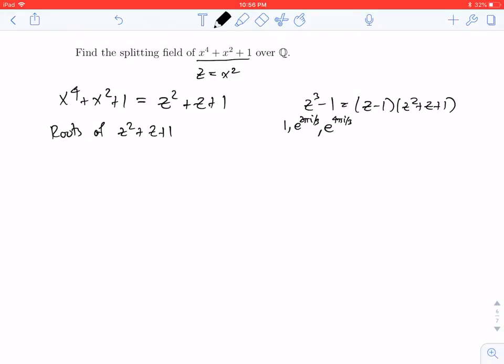The roots on the right must be the same. Well, 1 is the root of z minus 1, so the roots of z squared plus z plus 1 are e to the 2πi over 3 and e to the 4πi over 3.